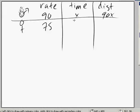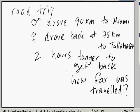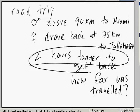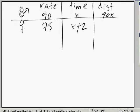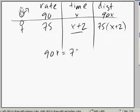We don't really know the time, but we do know it's x plus 2, because it took two hours longer to get back. So our equation will look something like this, 75 times x plus 2. And so what we need to do is 90x equals 75 times x plus 2.